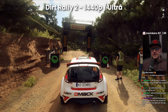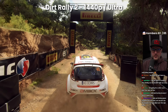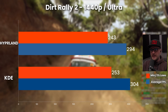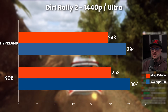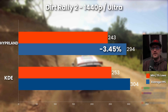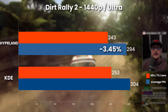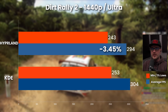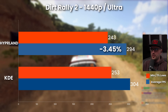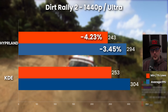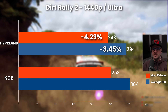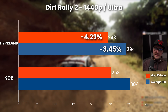There's only one way to find out if the rest of the games can save it. For Dirt Rally 2, KDE is running at 304 FPS on average versus Hyprland at 294 FPS average — a loss of minus 3.45% for Hyprland on average FPS. Looking at the minimum FPS, we are 253 on KDE versus 243 on Hyprland, which is minus 4.23% for Hyprland. We are still not winning on Hyprland, which was quite surprising.